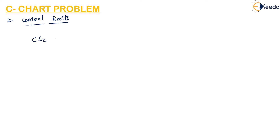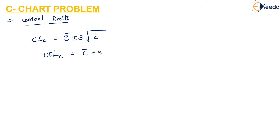The second step is to calculate the control limits. The formula for the control limit in a C-chart is C-bar plus or minus 3 times the square root of C-bar. We have found C-bar. Now to calculate the Upper Control Limit for the C-chart, it is C-bar plus 3 into root of C-bar.